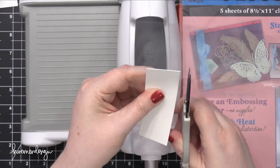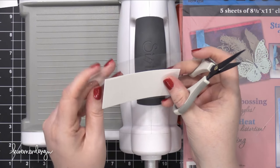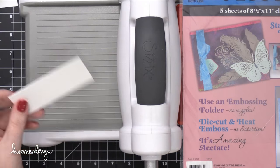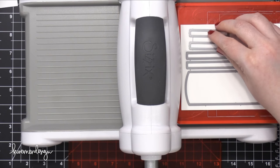So I'm going to use the cutout from that die as a guide to just cut out some acetate that's slightly larger than the window. It doesn't have to be precise measurement, just a little bit bigger than the window.